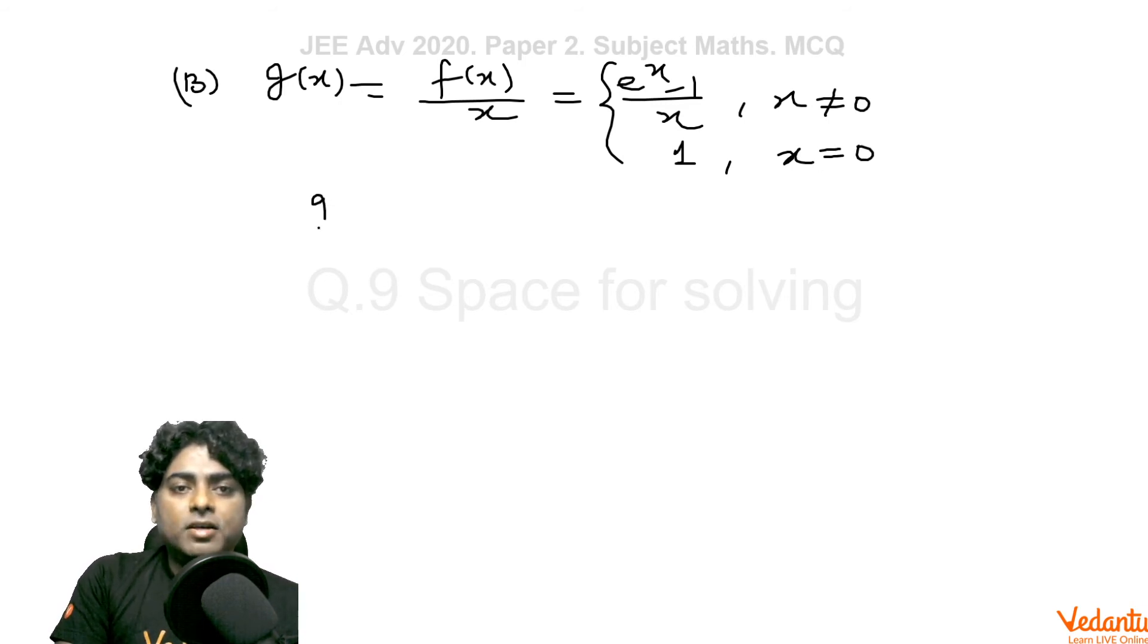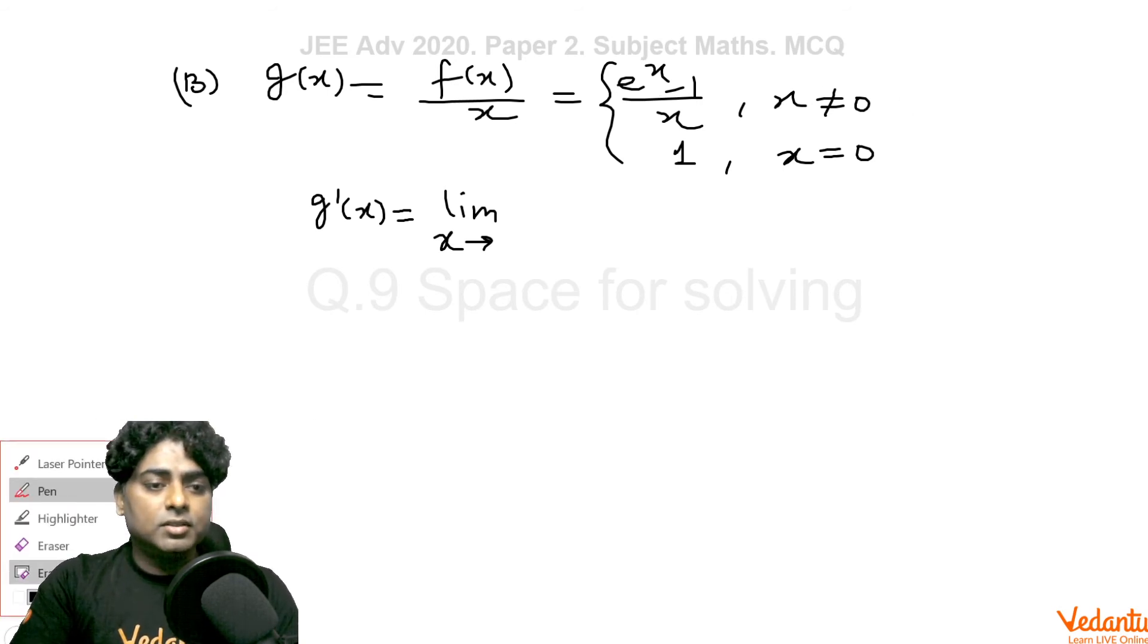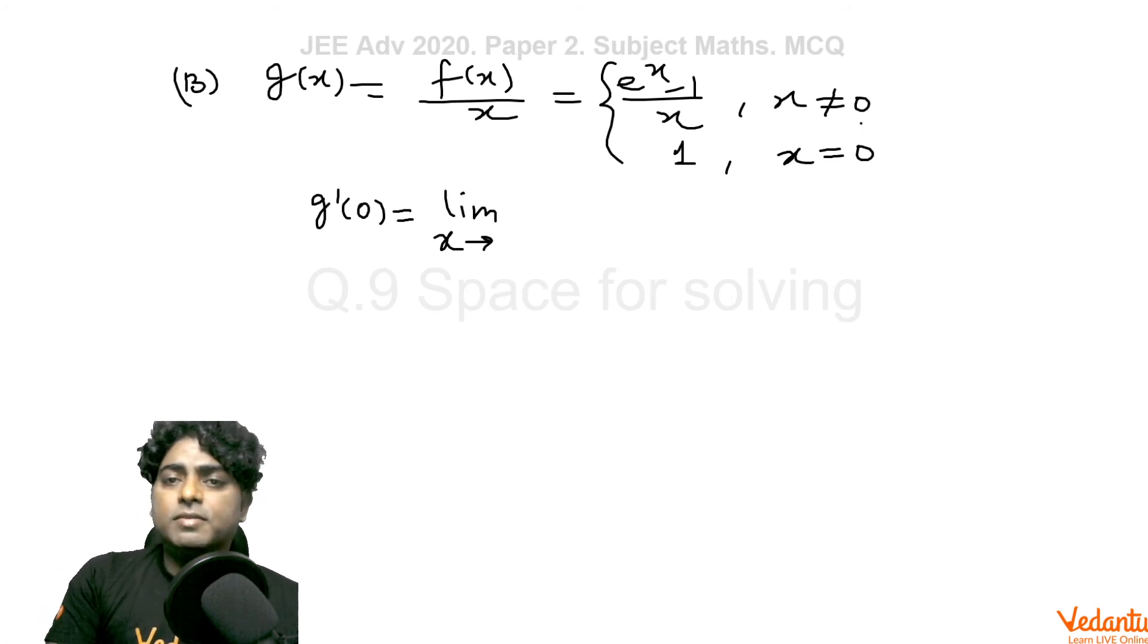Now going for the derivative of g, g'(x) can be written from the first class principle again. g(x) is differentiable everywhere. It is very clear from the function (e^x - 1)/x. The only doubtful point is we should check the differentiability at 0. So we need to check differentiability only at x equal to 0. Clearly it is differentiable everywhere.